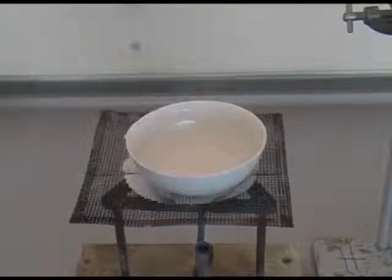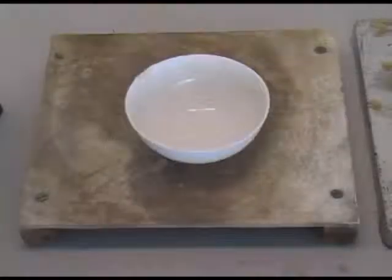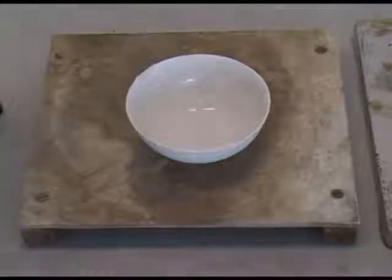Once we've done this, we remove the evaporating basin from the heat, and we place it somewhere, perhaps in the sunlight or on a radiator, to evaporate the water a bit more slowly over a period of time.